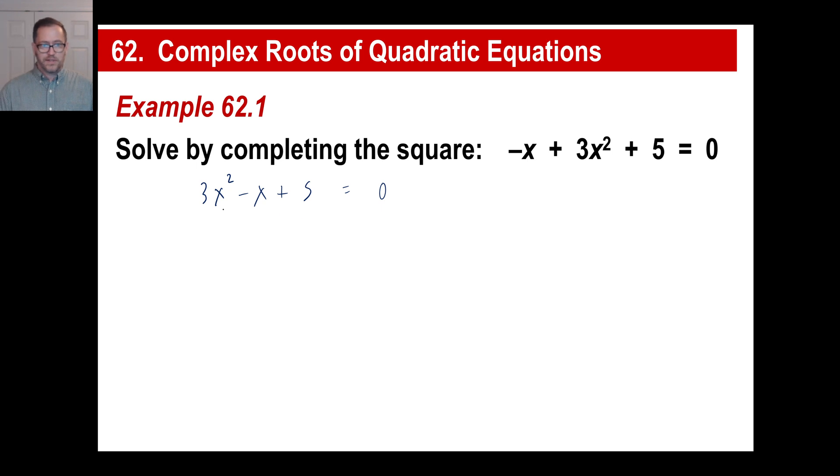So, first thing we need to do is divide by 3 all the way across. All right, so now we have x squared minus, I just said minus, and I wrote plus. That made no sense at all. Okay, it's going to be an interesting lesson today. All right, minus a third x plus 5 thirds, and I'll just leave some space here, and of course, 0 divided by 3 is 0. All right, so what does this number need to be? This number needs to be 1 half of a third, which is 1 sixth, and then that's squared. So, it's got to be 1 over 36.